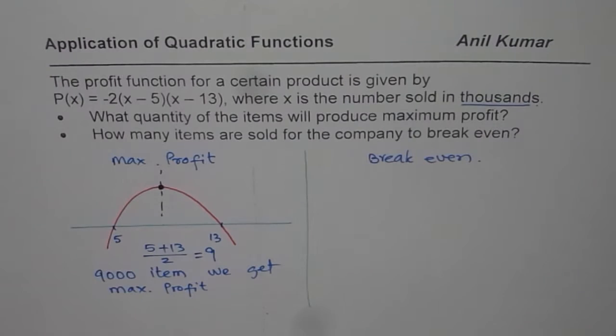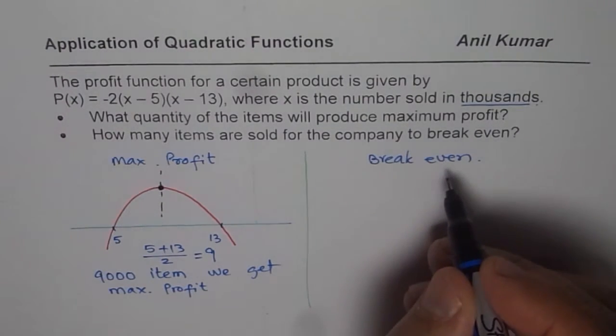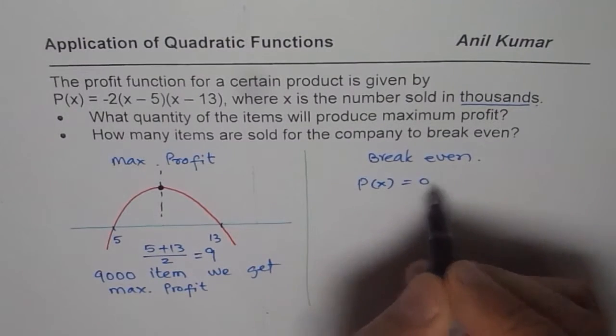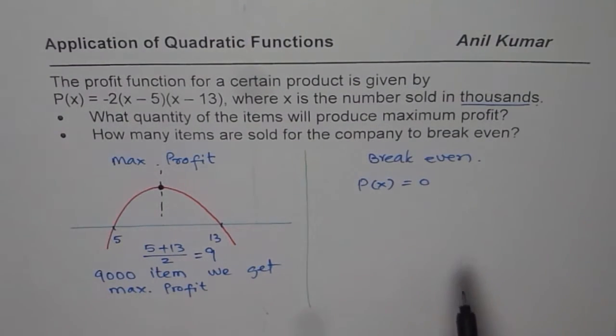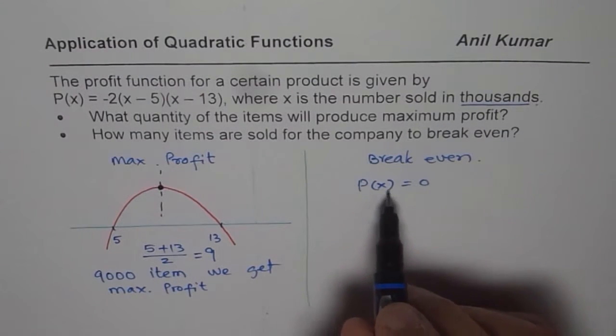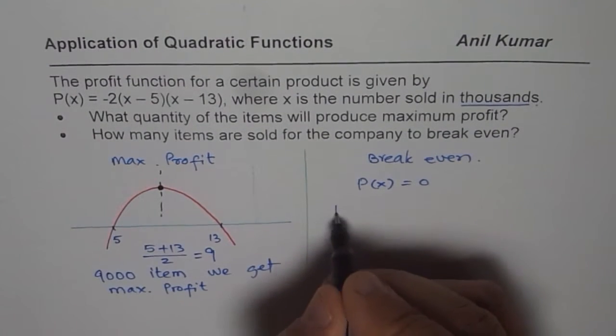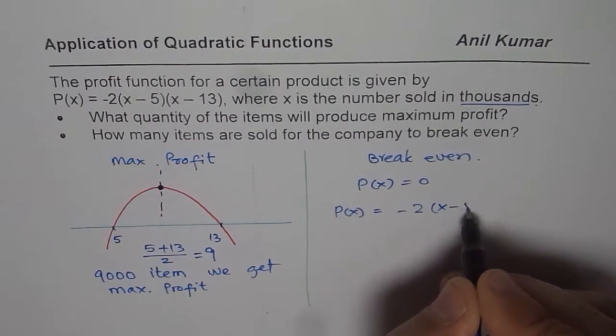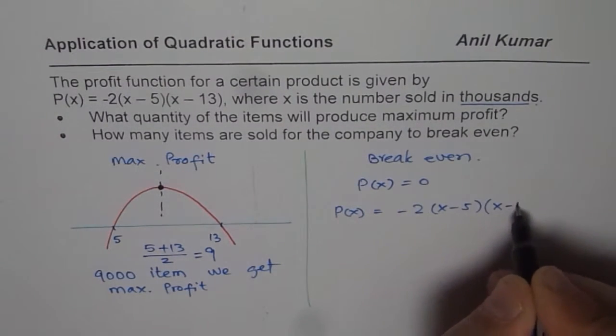The other one is break even. So what do you mean by break even? At break even, profit is 0. That means you have taken care of all your cost. The revenues were enough to cancel out the cost. So break even is when profit is 0. Now, the equation here is profit = -2(x - 5)(x - 13).